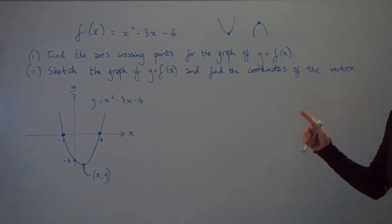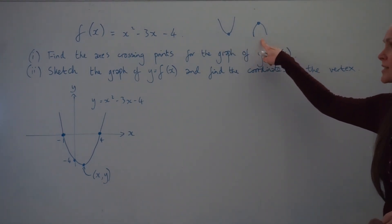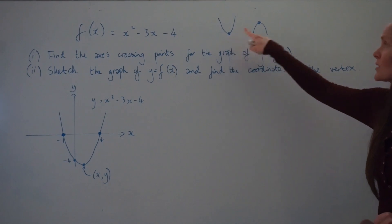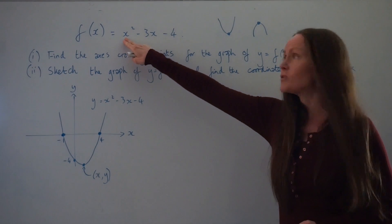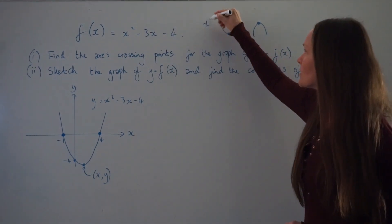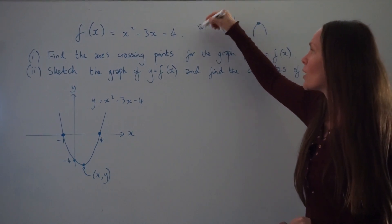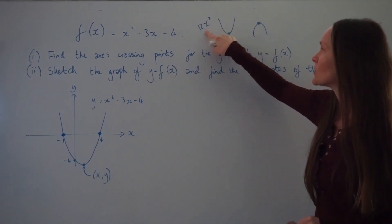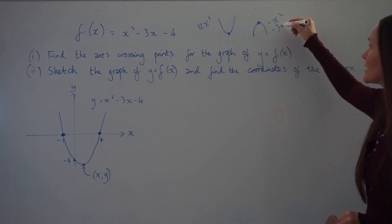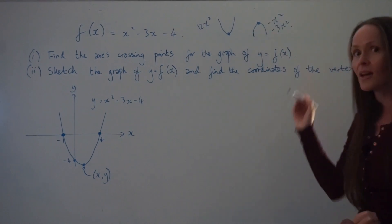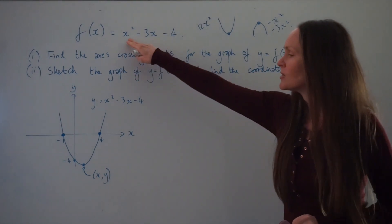Before working out the coordinates, it's important to know which way to draw the quadratic. Whenever the x² term is positive — such as x², 2x², or 12x² — the parabola opens upward. Whenever it's negative — such as -x² or -3x² — it opens downward. Since this question has positive x², I've drawn it opening upward.